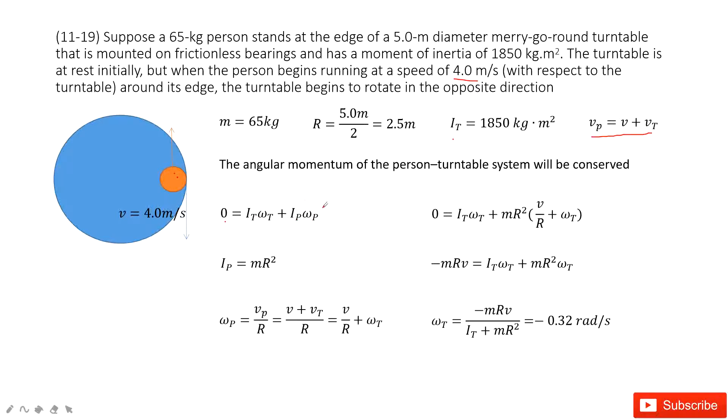Now we can see in this function, the It is given. And then ωt, we need to find, unknown. We need to find. And the Ip, we don't know. But ωp, we can get. So now we can see Ip for the person is the mass times r squared.